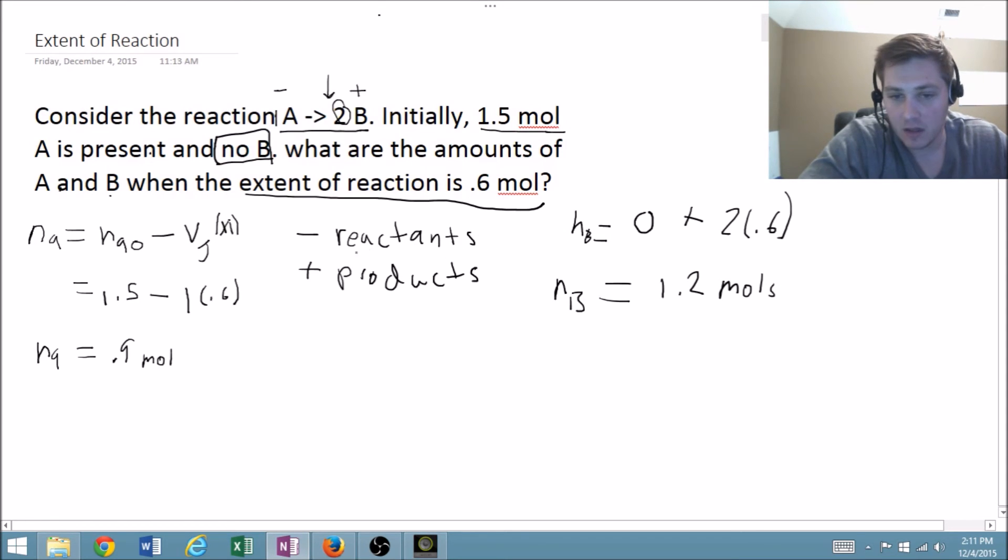Note that N most of the time denotes moles. So that is how we figure this out. It's kind of like saying that after 0.6 moles have reacted, how much A do we have, and how much B do we have.